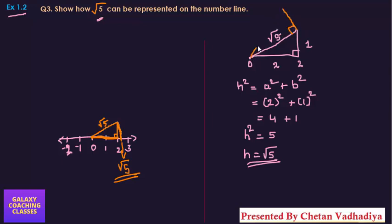So you will get this as √6. How? Again you need to do the same thing: h² = a² + b². This is your base and this is your height. √5 squared is 5, plus 1² will give you 5 + 1, which is 6.